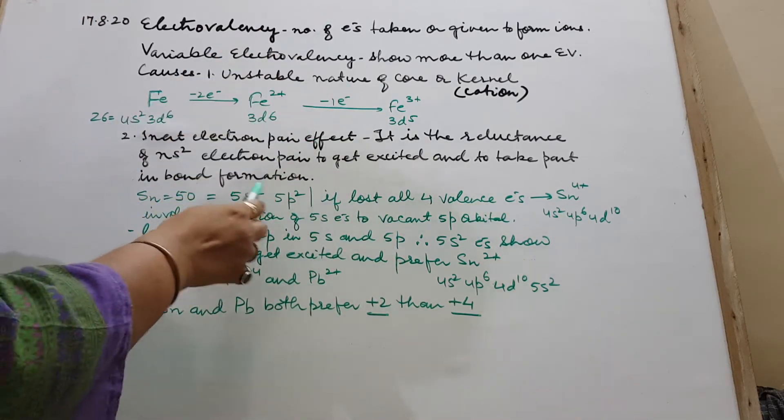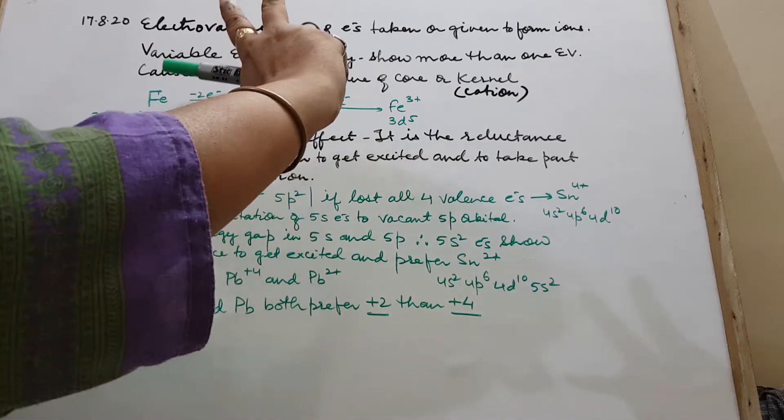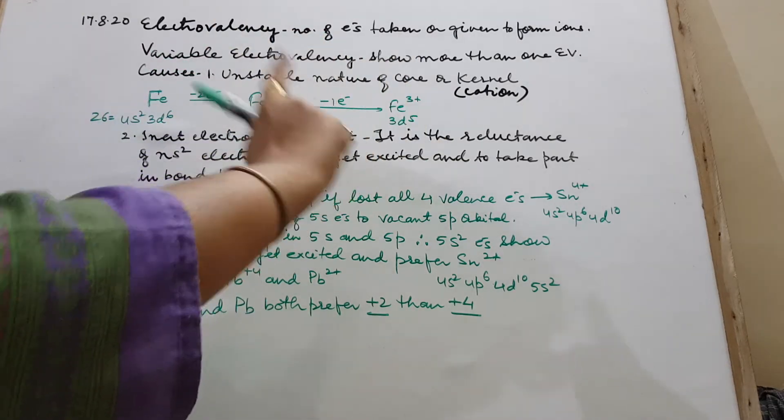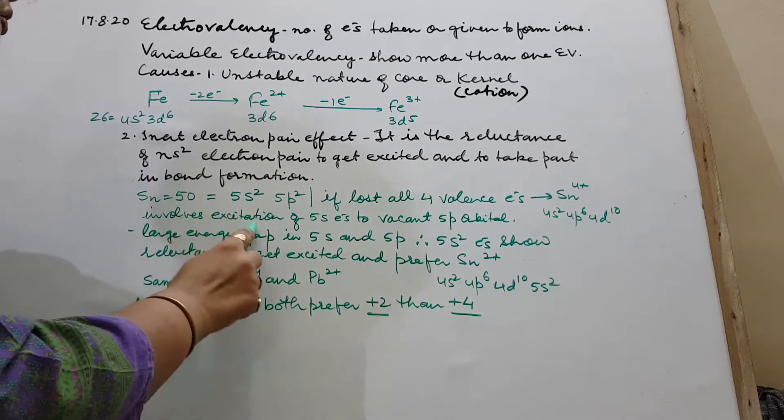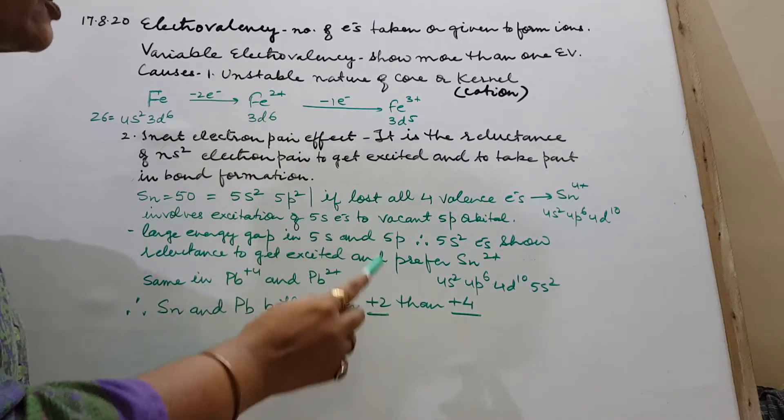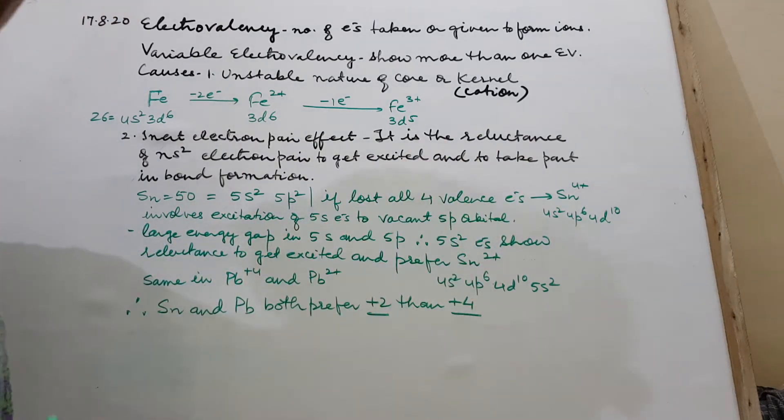So this involved excitation of 5s electrons to vacant p orbitals. Because 4 means p2 means only two were filled out of p3. One was still vacant. So it involves excitation of 5s electrons to 5p orbital.